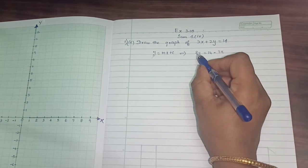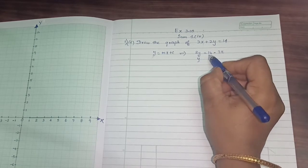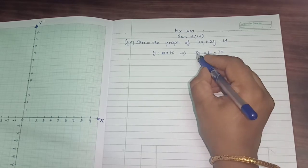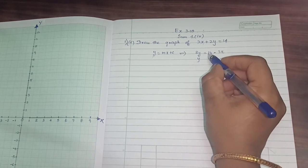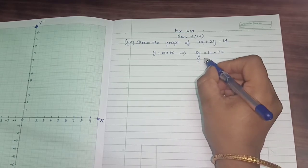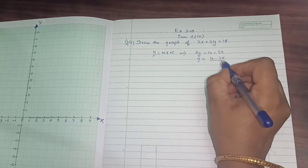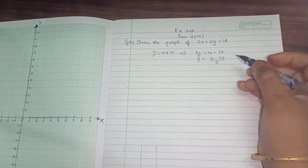Now, this y, I want only y here. This 2 will go as the denominator. It is already in product, so when you transpose to the right hand side, it will go as a division part. y is equal to 14 minus 3x, the whole divided by 2.